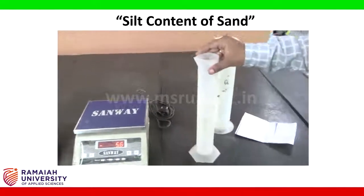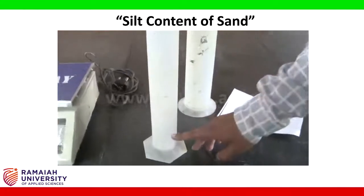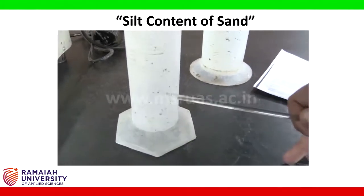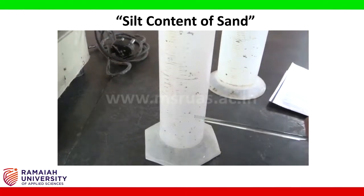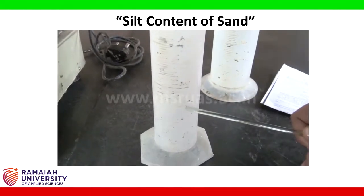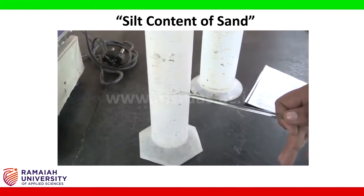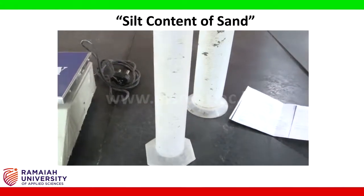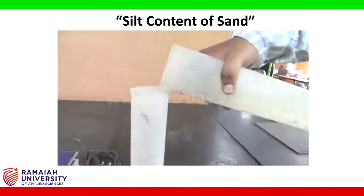Pour 100 ml of the NaOH solution into the measuring jar. Then add the sand to be tested until the meniscus level rises to the next 100 ml. Finally, add the solution for another 100 ml. We are going to keep that in conditioning for three hours. Now pouring the first 100 ml.